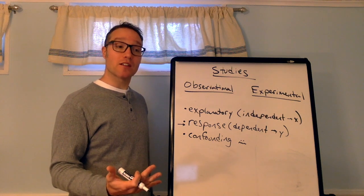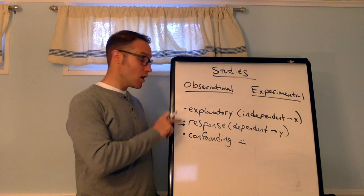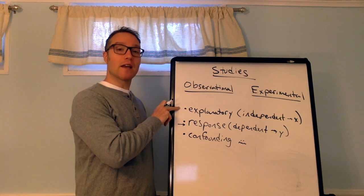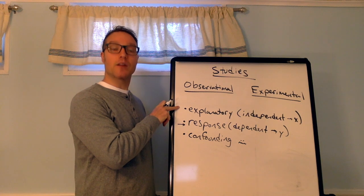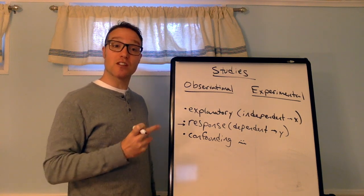So them believing that they're taking an actual treatment will elicit an actual, real, measurable response. And that's a confounding variable because we don't want to know what the placebo is doing. We want to know what the actual medication, the explanatory variable, is doing. And it's hard to separate those two if they're confounded with each other.